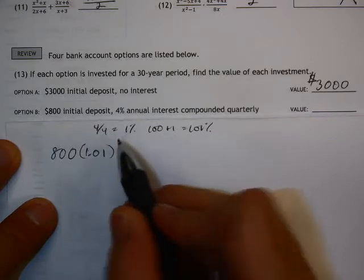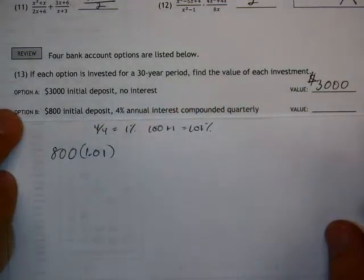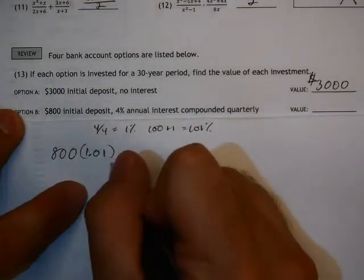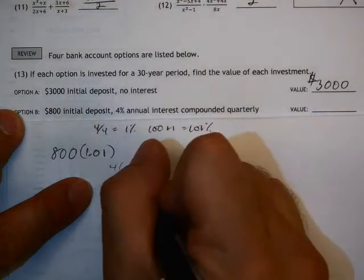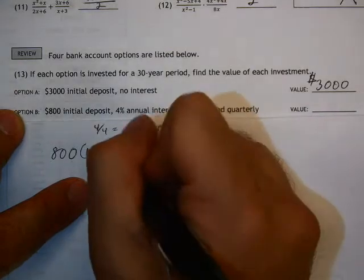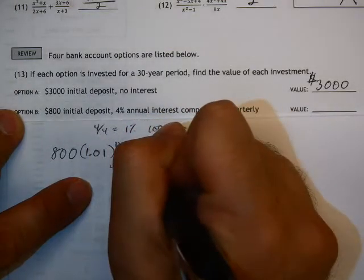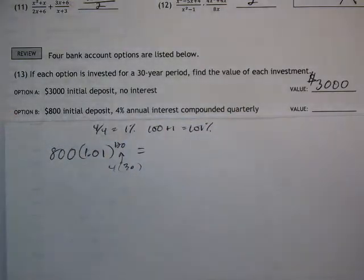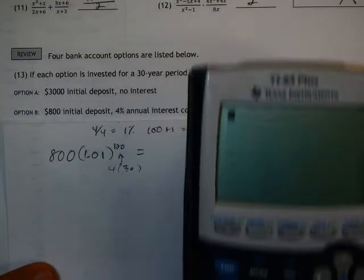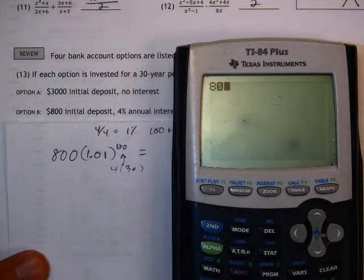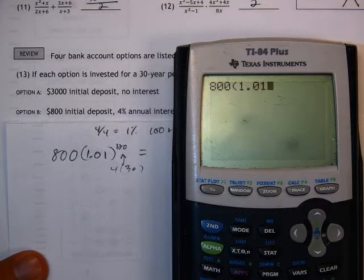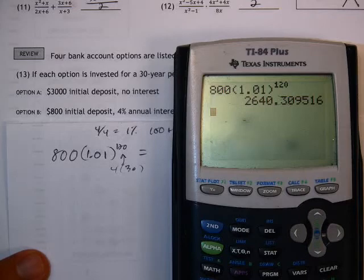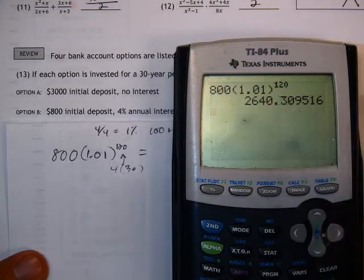Now the exponent represents how many times it's compounded total throughout this entire 30-year period. So this exponent has to be the 4 times a year that it's being compounded, from being compounded quarterly, times 30 for 30 years. 4 times 30 is 120. This, now when I work all this out, is going to give me the total amount in that bank account after 30 years. So in my calculator, I'm taking 800 times 1.01 raised to the 120th power. And that looks like it's going to give me $2,640, and it's going to round to 31 cents.